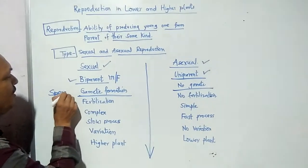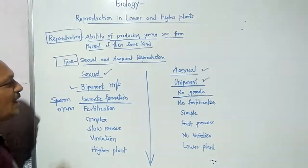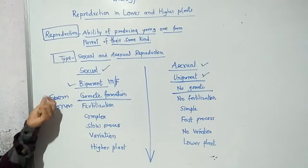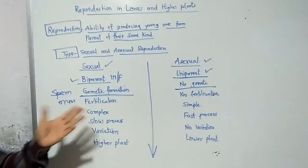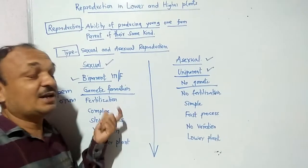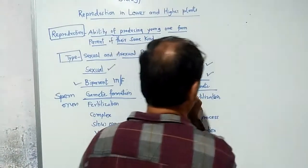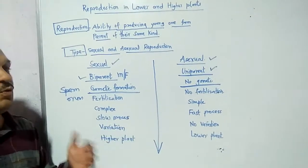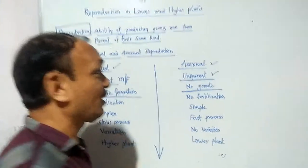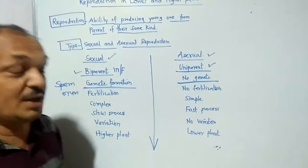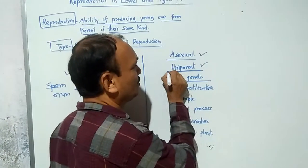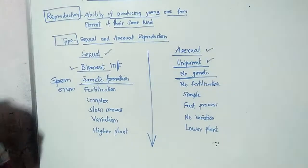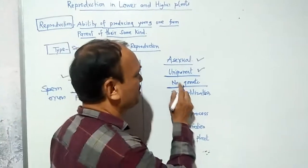Sperm and ovum — these are the gametes required for sexual reproduction. In asexual reproduction, such as cutting a stem in a garden to grow a new plant, there is no requirement of gametes and no requirement of both parents. So gamete formation is very important in sexual reproduction, whereas in asexual reproduction there is no gamete formation.